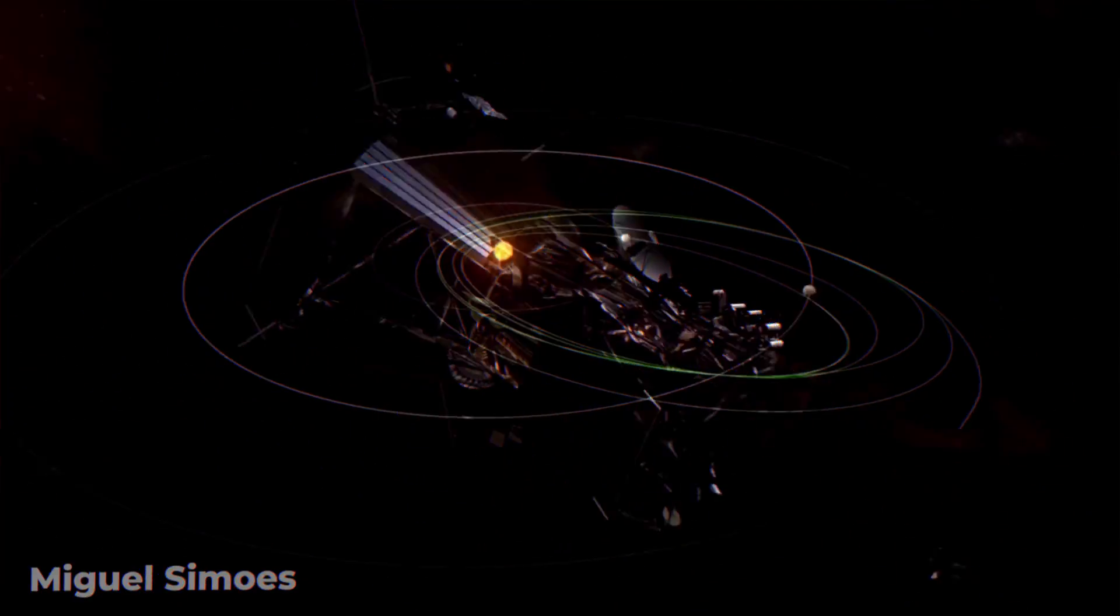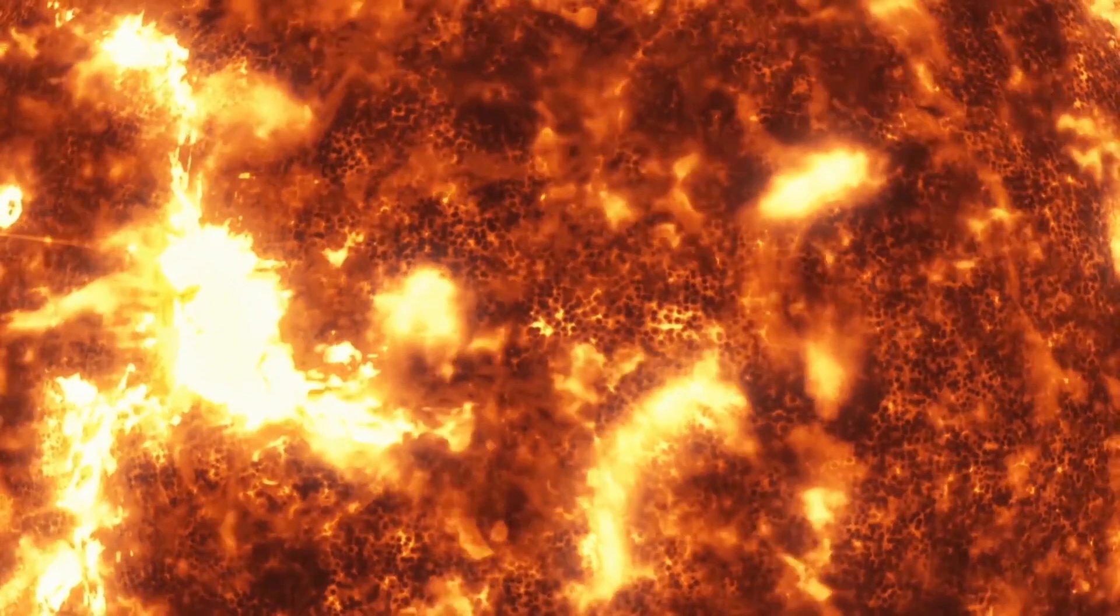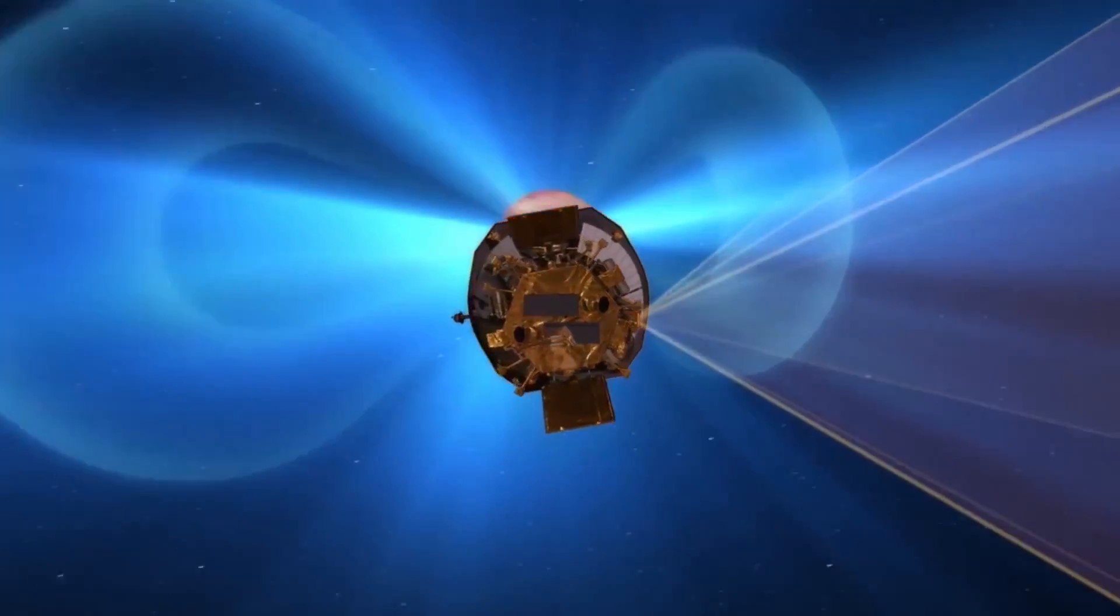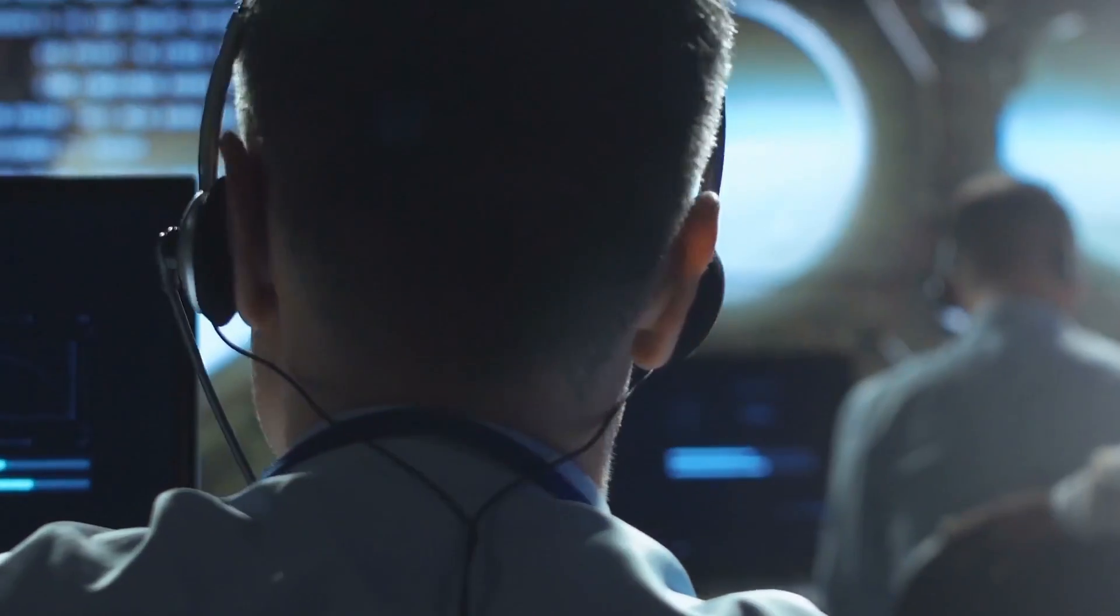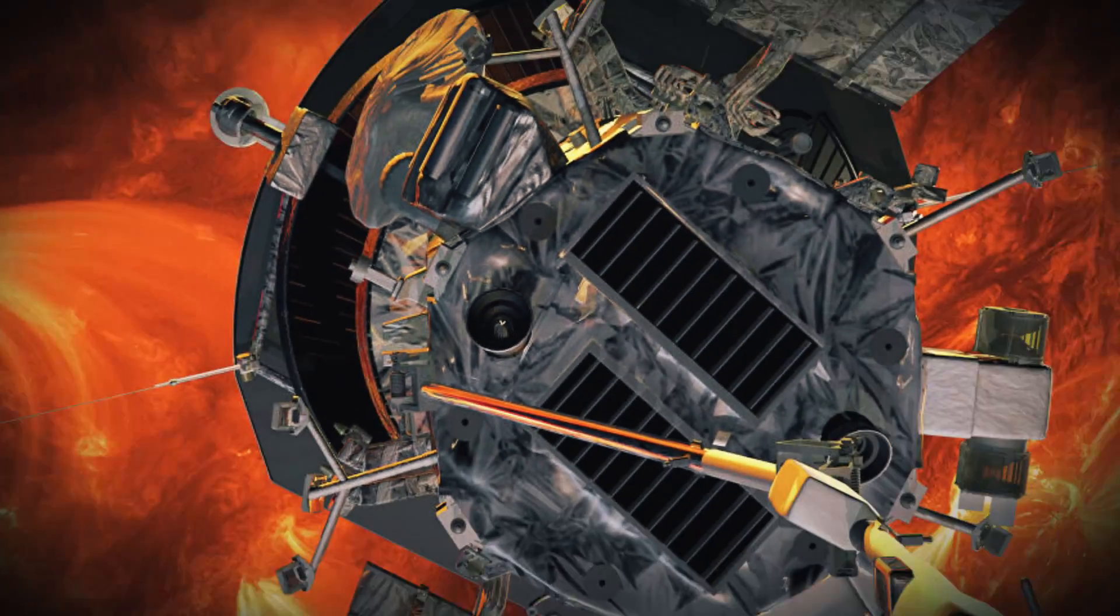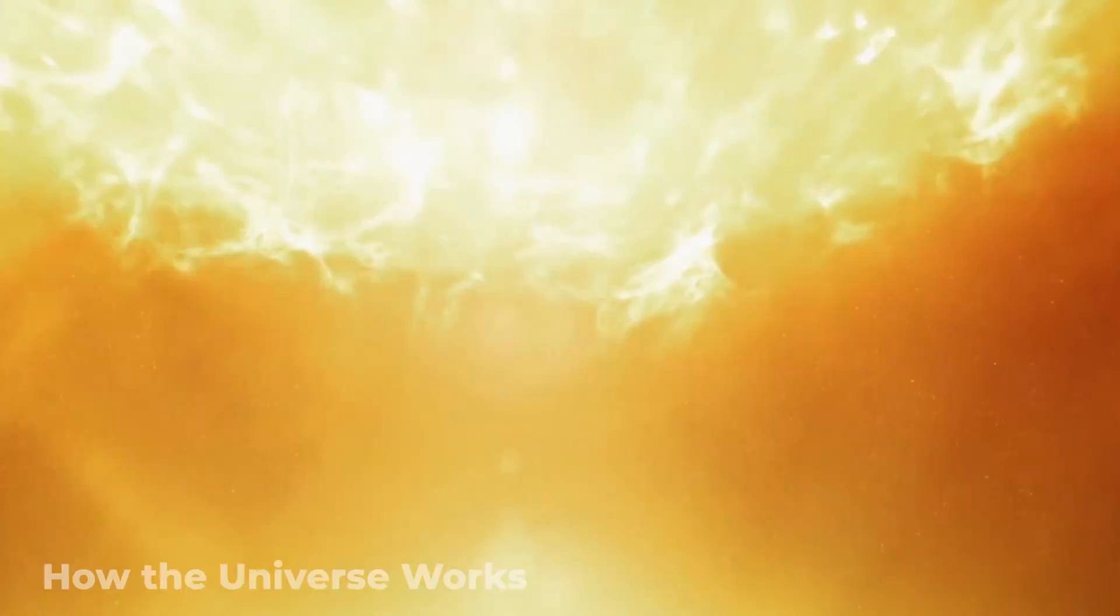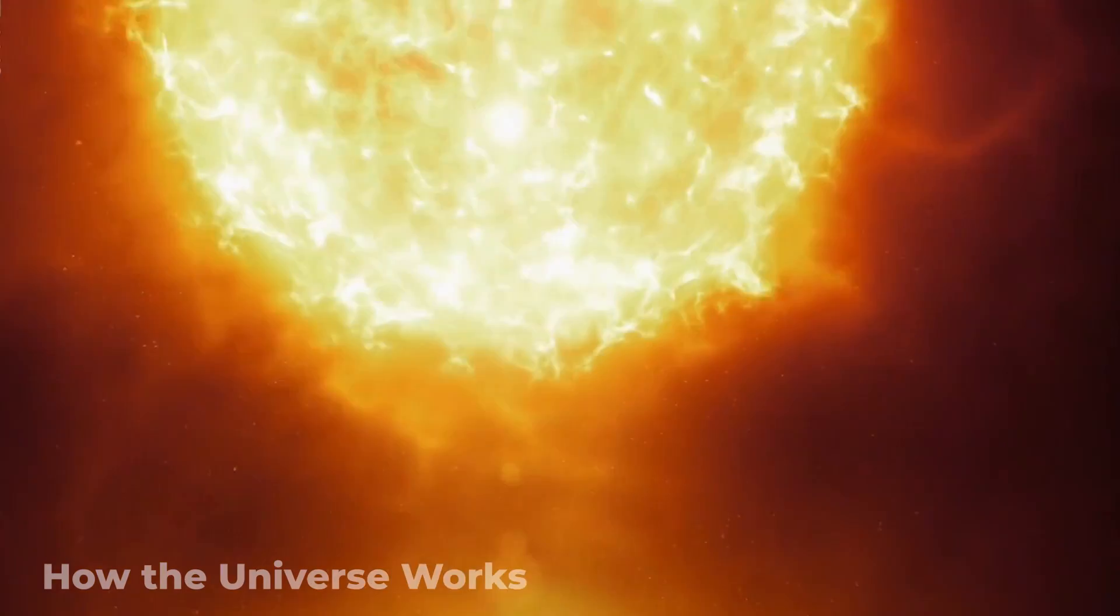The Parker Solar Probe is the first man-made object to touch the Sun's outer layer, and the recent findings from the mission seem to have left NASA with more questions than answers. Let's take a look into NASA's Parker Solar Probe and learn why its newest discoveries have left scientists baffled.